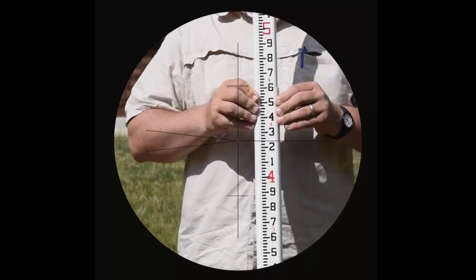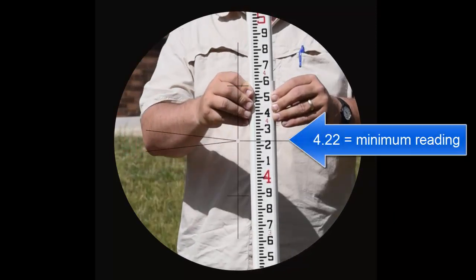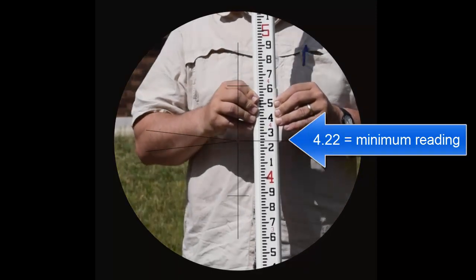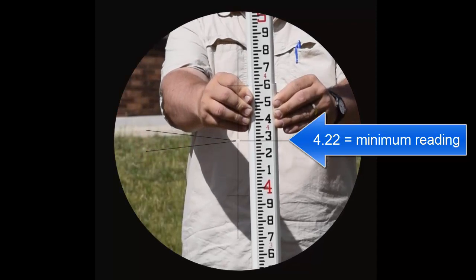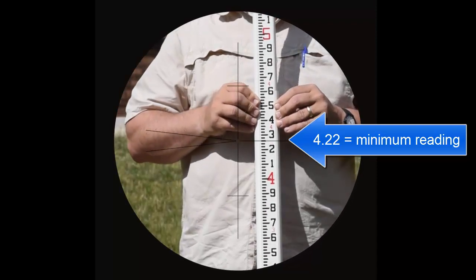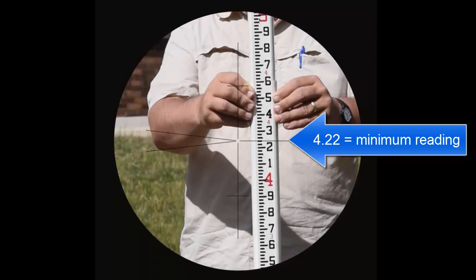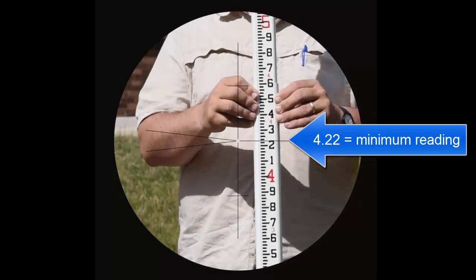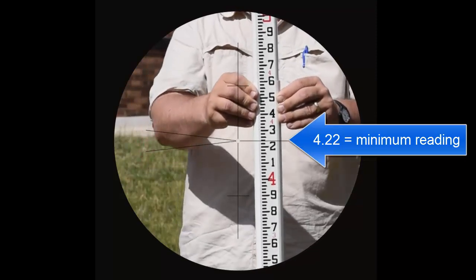To ensure the rod is vertical relative to the instrument operator's left and right, stand behind the rod looking toward the instrument. Use your peripheral vision to search out visual clues to help you keep the rod plumb, left and right, as you rock it smoothly forward and back.